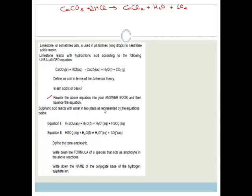Now it says sulfuric acid reacts with water in two steps as represented by the equations below. You've got H2SO4 + H2O → H3O+ + HSO4-, then the HSO4- reacts with water again to give another H3O+ + SO4²-. Define the term ampholyte. An ampholyte is a substance which can act as both an acid or a base, depending on what it's reacting with.